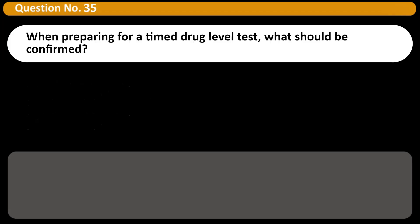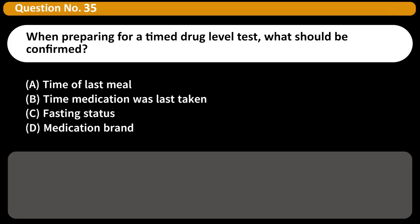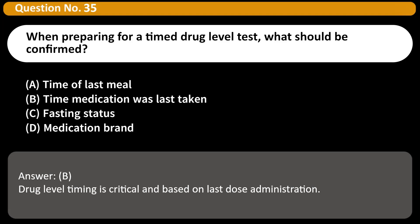When preparing for a timed drug level test, what should be confirmed? A. Time of last meal. B. Time medication was last taken. C. Fasting status. D. Medication brand. Answer: B. Drug level timing is critical and based on last dose administration.